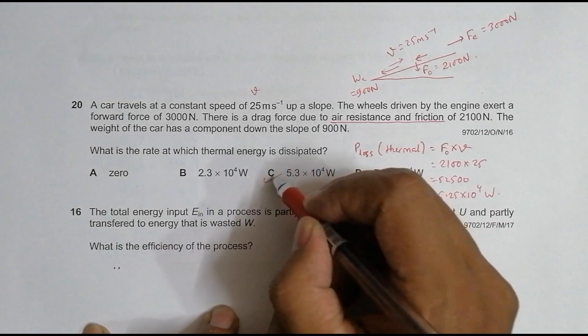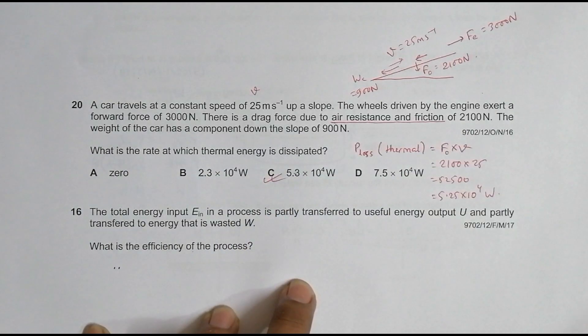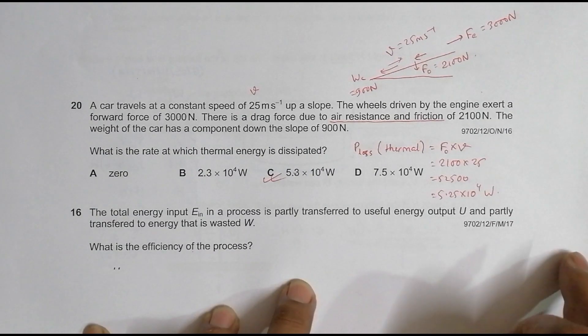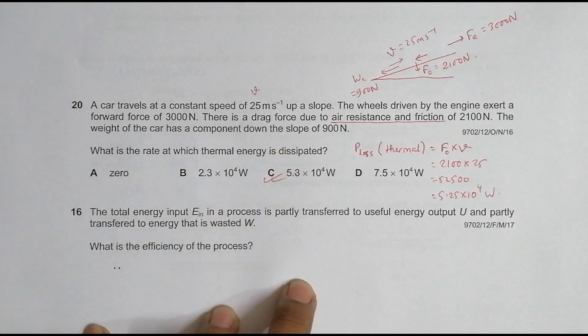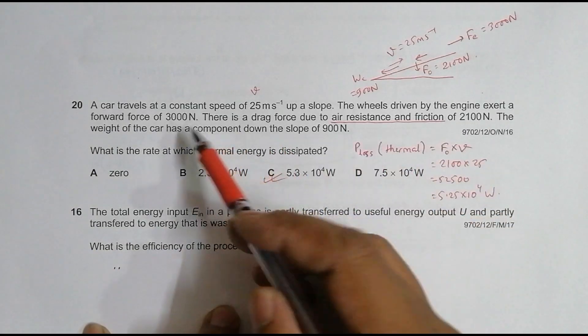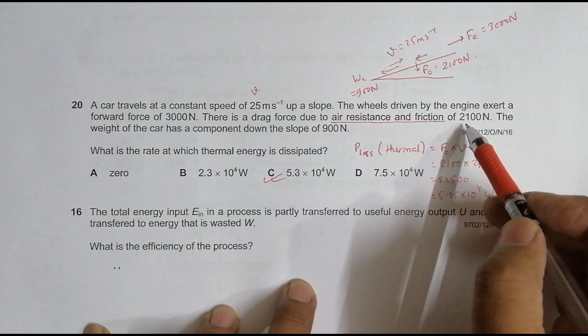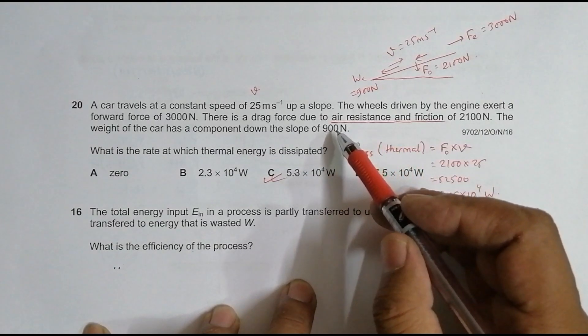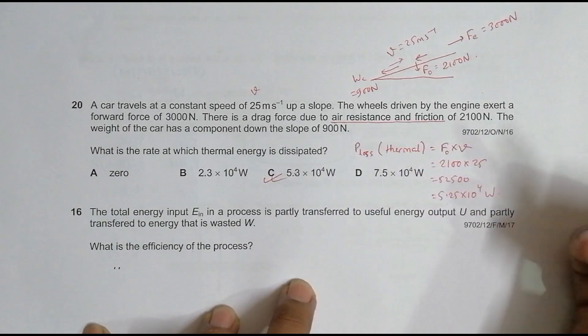As I mentioned in the very beginning, this question is a deceiving type question because people often would say that since the velocity is uniform, the forces should be equal, so 3000 equals 2100 plus 900. They'd say the total force is zero and so the rate should be zero.